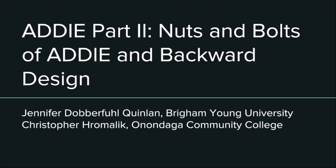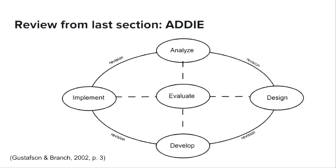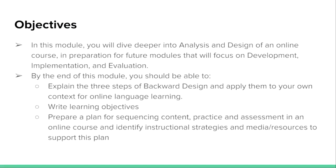Today we're going to talk a little bit about ADDIE more in depth. If you took the previous module, you learned a little bit about ADDIE and this probably looks familiar to you. Just to review, ADDIE includes the Analyze, Design, Develop, Implement, and Evaluate stages. And Chris talked last time about how this isn't really a linear process but rather that it's iterative. Today in this module we'll go further into the analysis and design of an online course, as preparation for future modules that talk about the development, implementation, and evaluation.